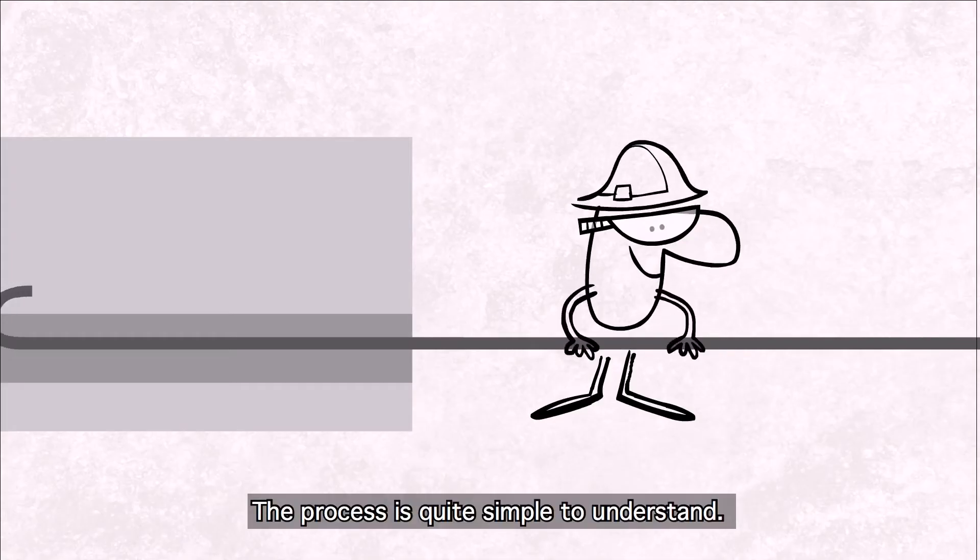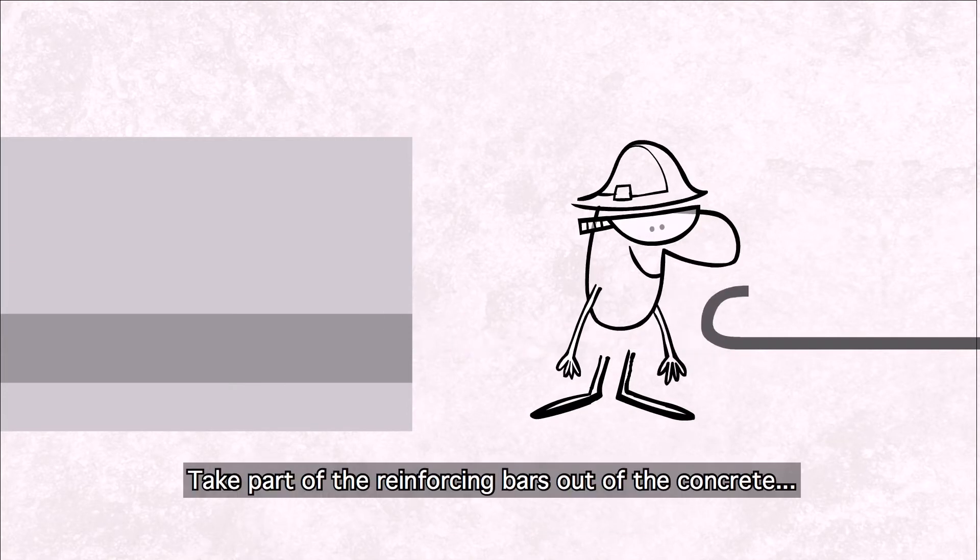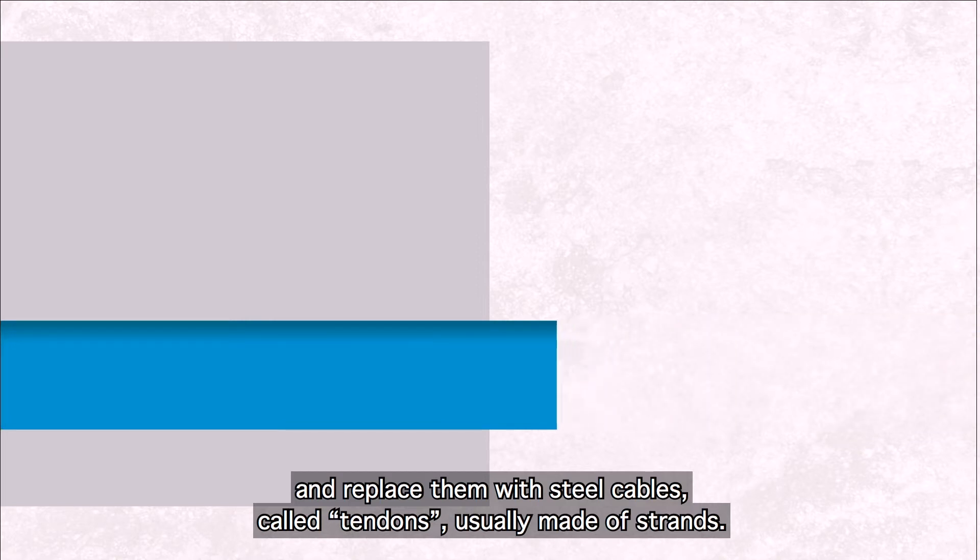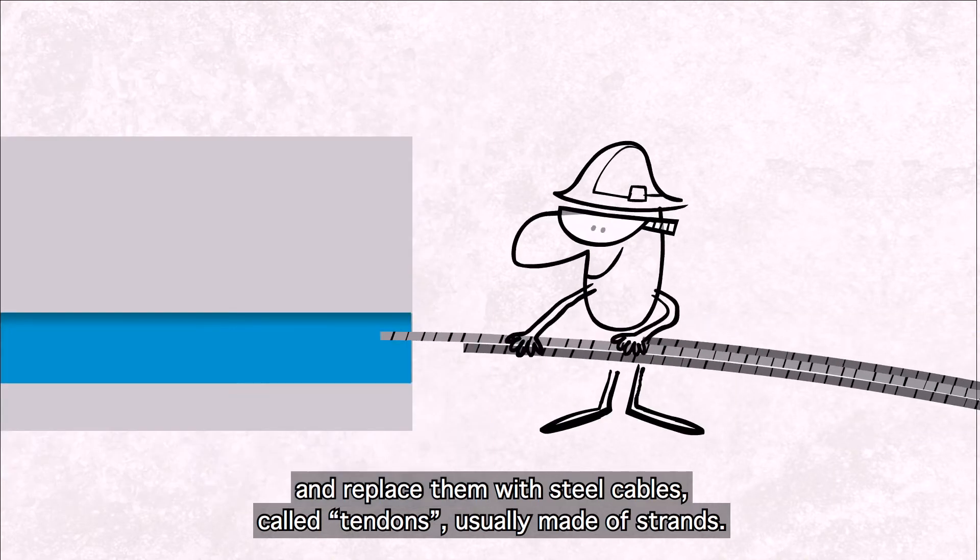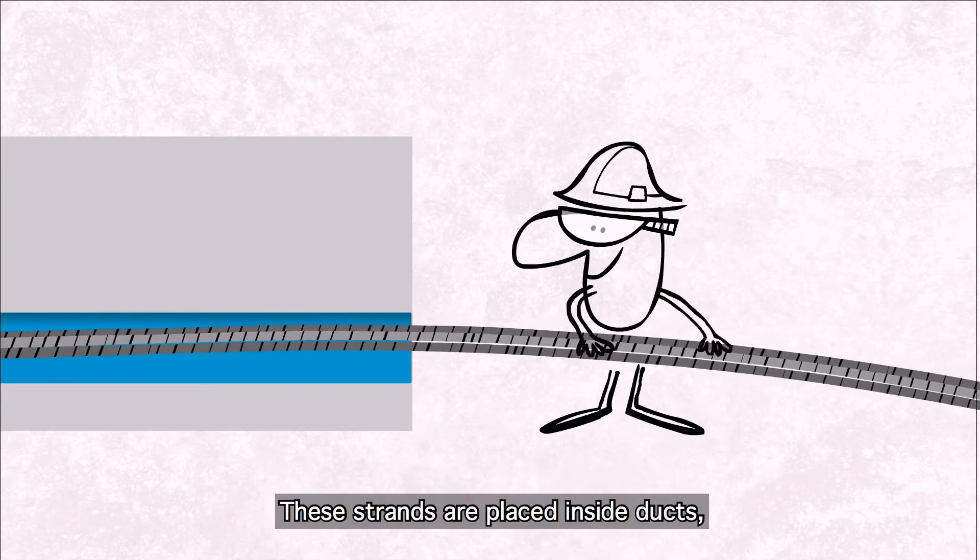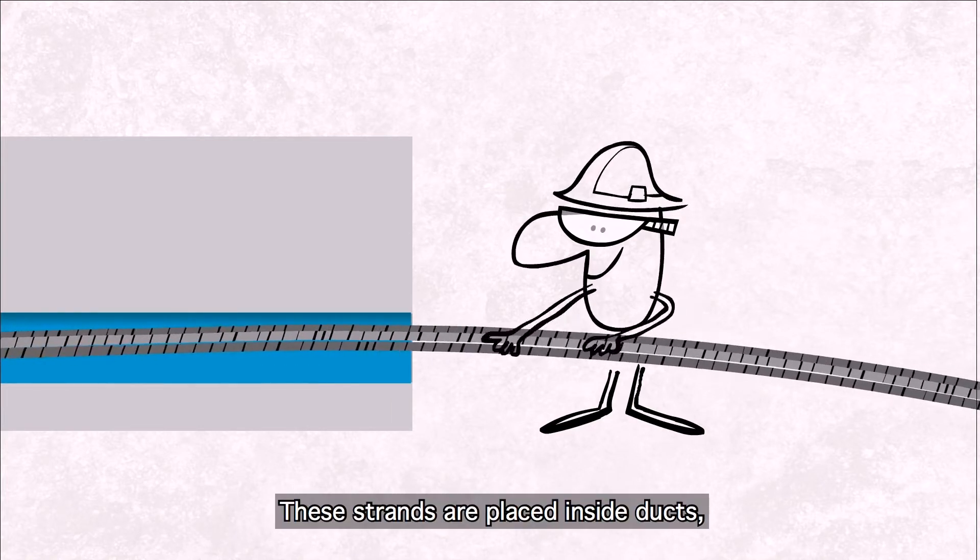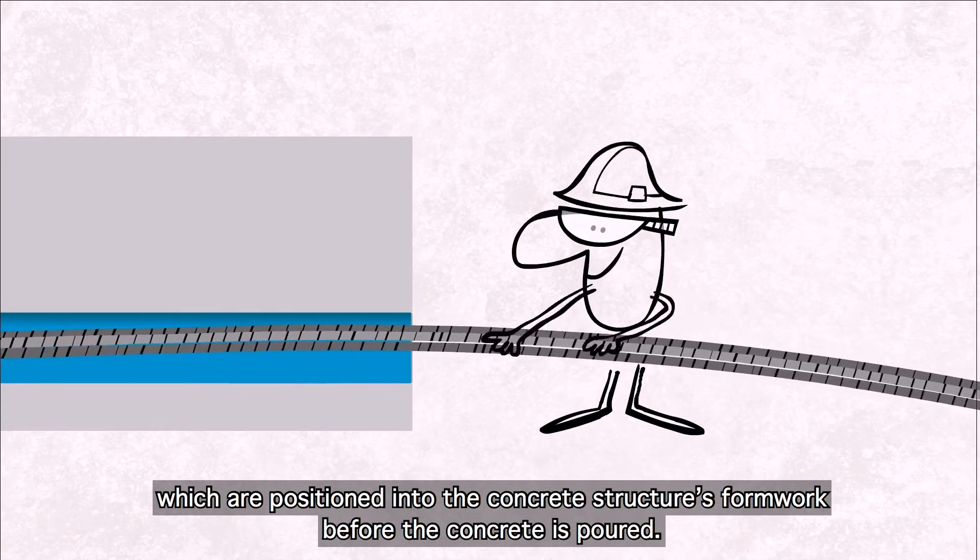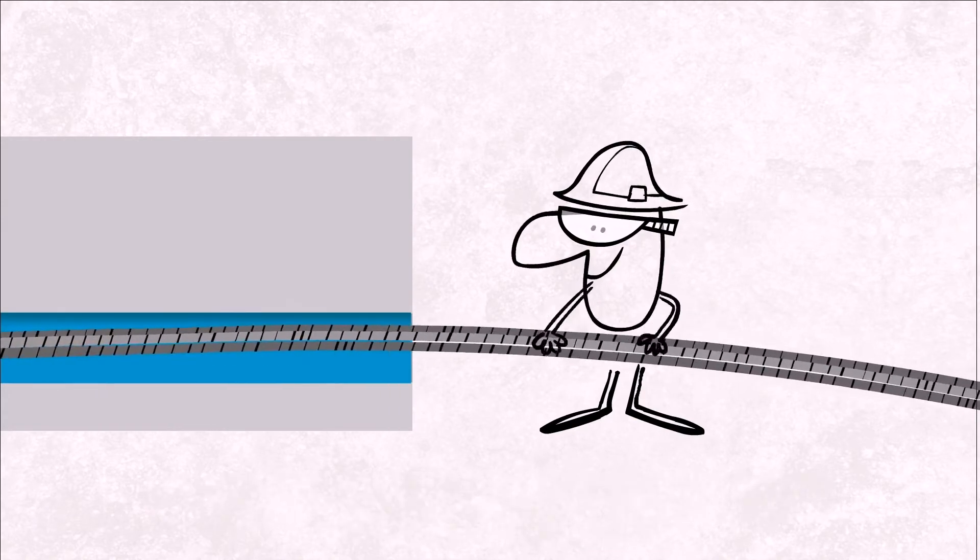The process is quite simple to understand. Take part of the reinforcing bars out of the concrete and replace them with steel cables called tendons, usually made of strands. These strands are placed inside ducts, which are positioned into the concrete structure's formwork before the concrete is poured.